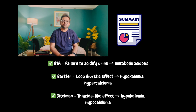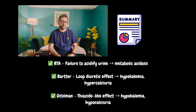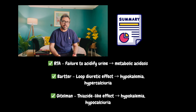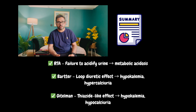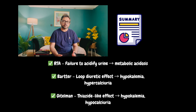Let's summarize everything. Renal tubular acidosis is a failure to acidify the urine, and as a result metabolic acidosis happens. Bartter syndrome is like a loop diuretic effect, associated with hypokalemia and hypercalciuria. In Gitelman syndrome, there is a thiazide-type effect and it is associated with hypokalemia and hypocalciuria.